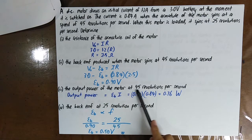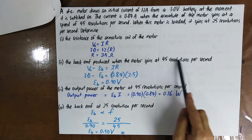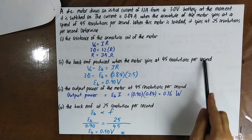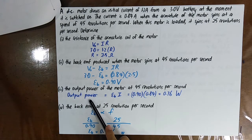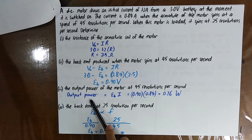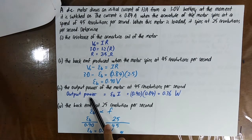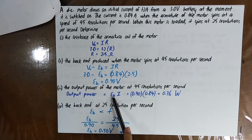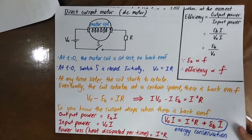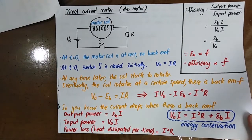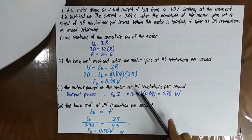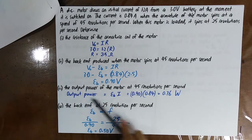Find the output power of the motor at 45 revs. The output power is EB·I, the input power is V₀·I, and I²R is heat dissipated. So you can calculate the output power.